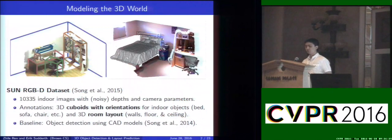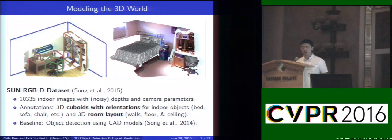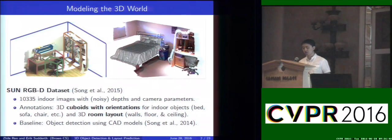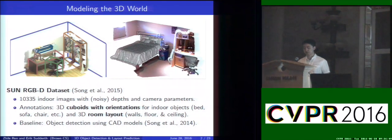Recently there's a growing trend of modeling the 3D world. Specifically, we're mostly interested in working on a dataset called SunRGBD, which contains many indoor images with depth and camera parameters. There's also really high-quality annotations, such as 3D cuboids with orientation and 3D room layouts. There's a baseline method on this dataset which makes use of 3D CAD models.